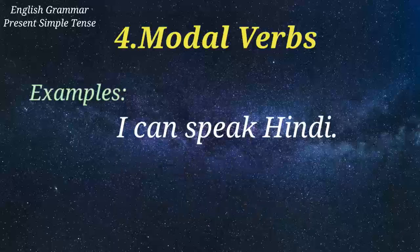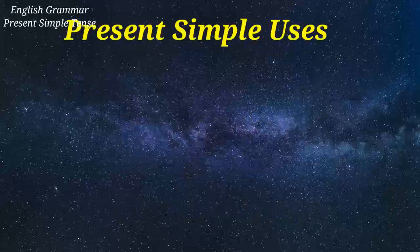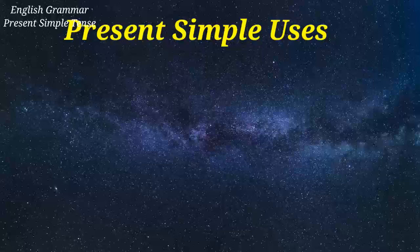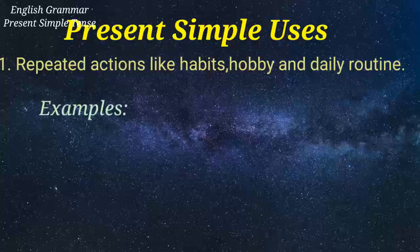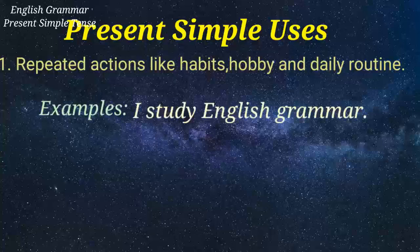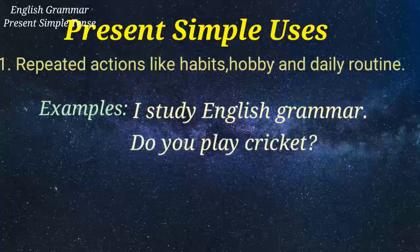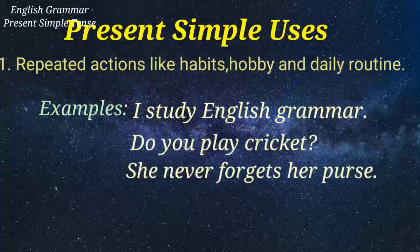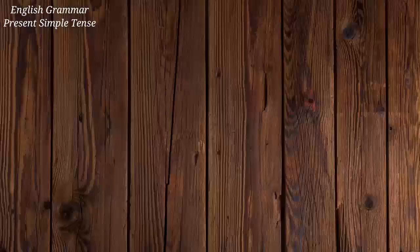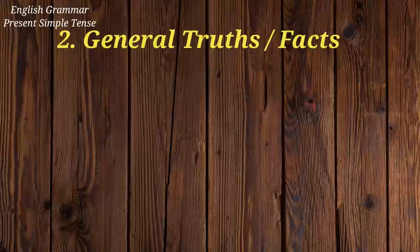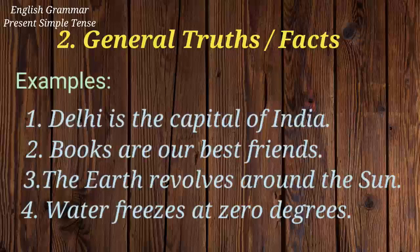Now let us see present simple uses. This tense is used to express repeated actions like habits, hobbies, and daily routine. For example: I study English grammar, do you play cricket, she never forgets her purse, the bus leaves every evening at 6 pm. It is also used to express general truths or facts. For example: Delhi is the capital of India.